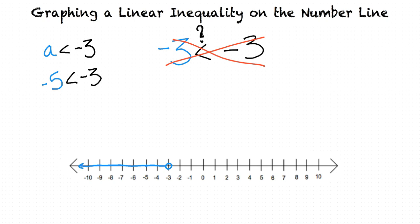And now our graph shows all values that a can equal while still making this inequality true? Right. So we're done. Can we try one more example? Sure.